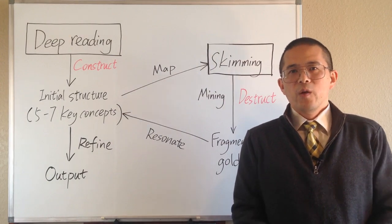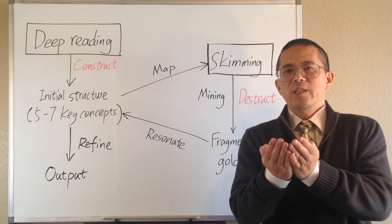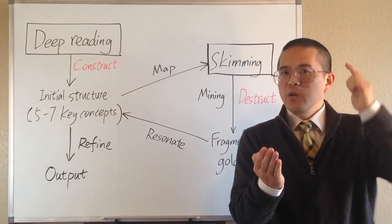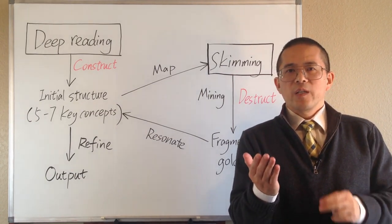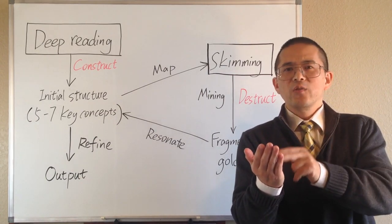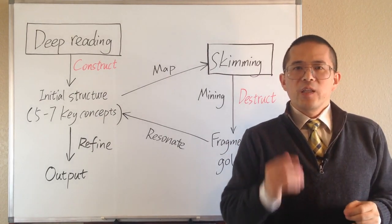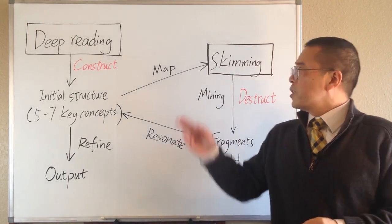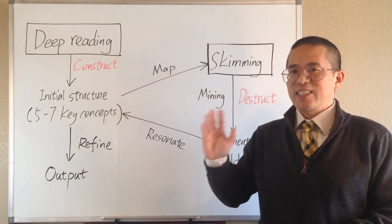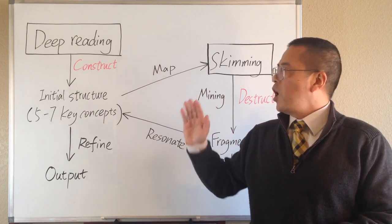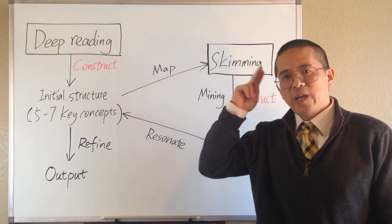First of all, when we are reading, we usually can remember more when we can relate what we're reading with something we already know. In fact, the most efficient way of learning is to connect the new knowledge with the existing knowledge in our brain. Therefore, before we start skimming on a certain topic, we first should establish a knowledge framework on that topic. It is like a map in our brain.